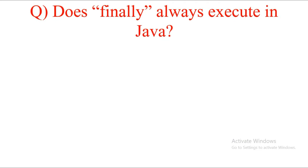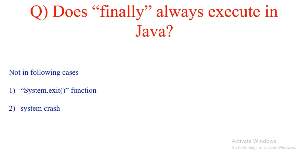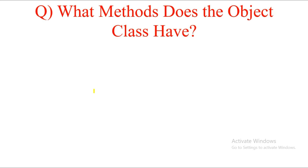The next question is: does finally always execute in Java? We know the finally block executes whether or not a try-catch occurs. However, there are two cases when finally does not execute: first, when you explicitly call System.exit(); and second, when the system crashes. Whenever your system crashes or you explicitly call System.exit(), the finally block will not execute. These are the only two conditions.